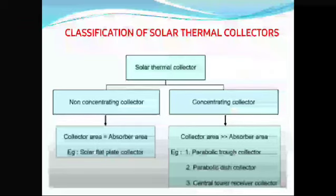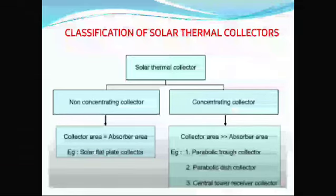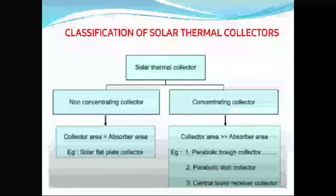In non-concentrating collectors, the collector area is equal to the absorber area. In concentrating collectors, the collector area is greater than the absorber area. Examples of concentrating collectors are parabolic trough collector, parabolic dish collector, and central tower receiver collector.